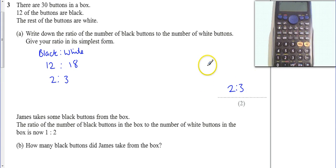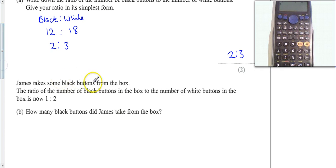Didn't really need my calculator for this. So now it says James takes some black buttons from the box. The ratio of the number of black buttons in the box to the number of white buttons is now 1:2. Well, I look at this - if I start with the ratio 1:2, and he's only taken black buttons, so there's still 18 white.